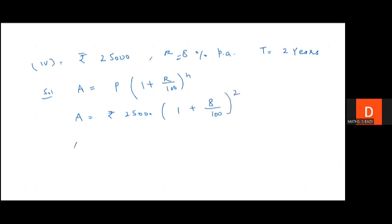Amount = rupees 25,000 × (1 + 8/100)^2. Amount = rupees 25,000 × (100 + 8)/100 raised to the power 2. Amount = rupees 25,000 × 108/100 × 108/100.